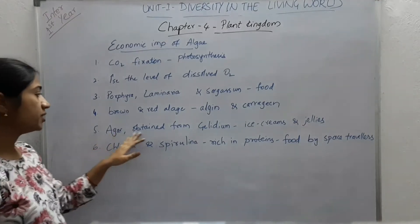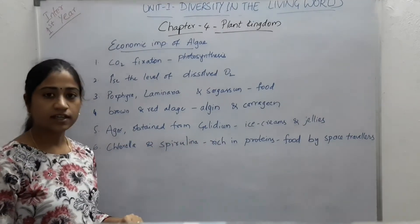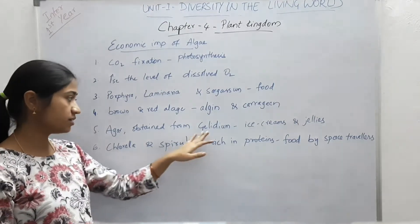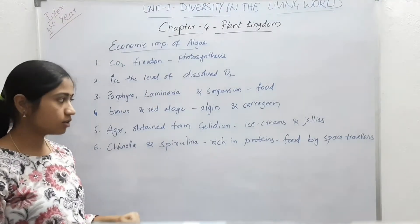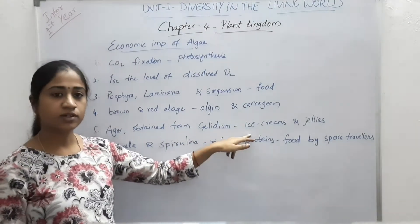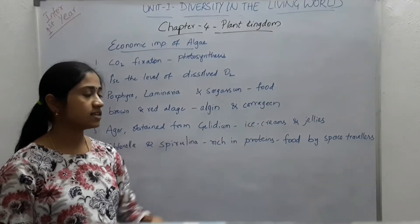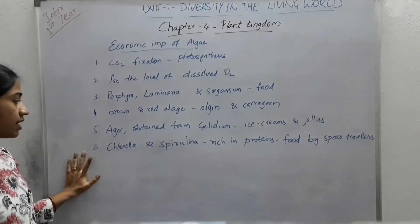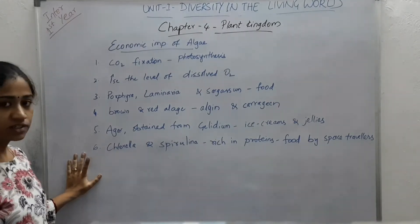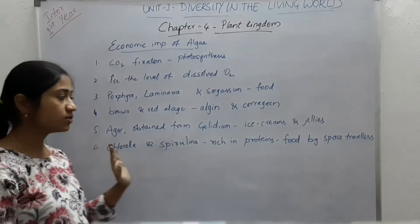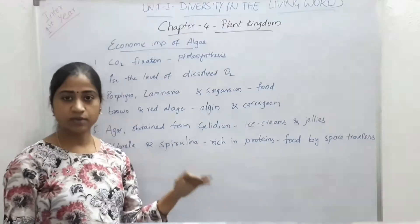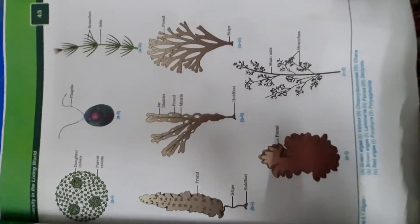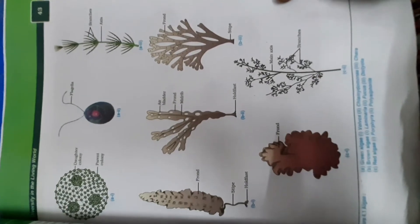Agar-agar, obtained from Gelidium, is used in growing microbes and also in preparation of ice creams and jellies. Chlorella and Spirulina, which are rich in proteins, are used as food supplements even by space travelers.